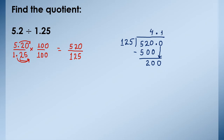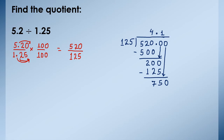So 125 ones are 125. Subtract them. 10 minus 5 is 5, and 9 minus 2 is 7. Again 75 is left. It is not divisible by 125. So increase one more zero here and bring it down. Now the number is 750. 125 sixes are 750. Remainder is 0. So we got quotient equals 4.16.